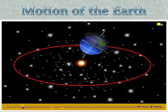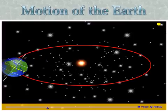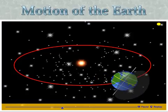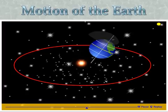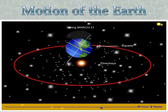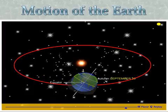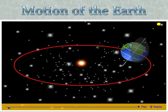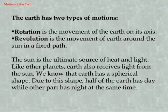Topic: Motion of the Earth. The Earth has two types of motions. Rotation is the movement of the Earth on its axis. Revolution is the movement of Earth around the Sun in a fixed path.